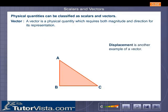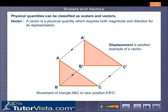Displacement is another example of a vector. Here we see that triangle ABC is shifted to a new position A'B'C'. Movement of triangle ABC to the new position A'B'C' is an example of a vector.